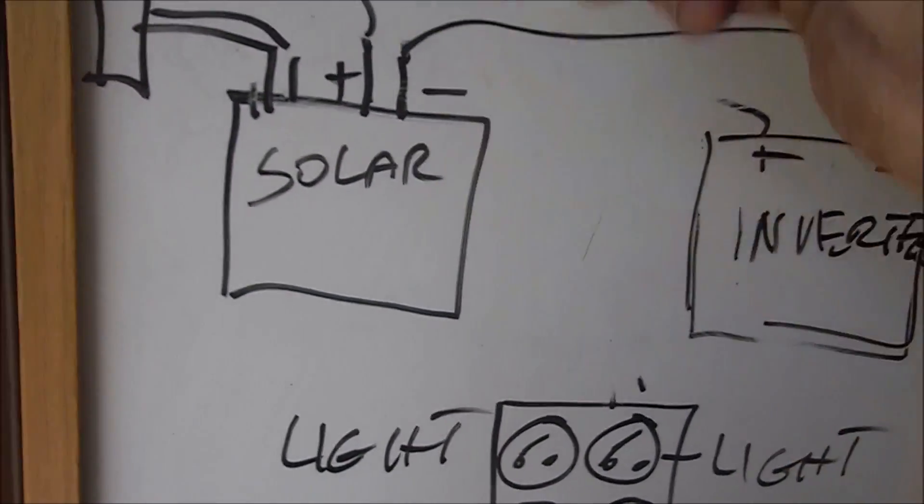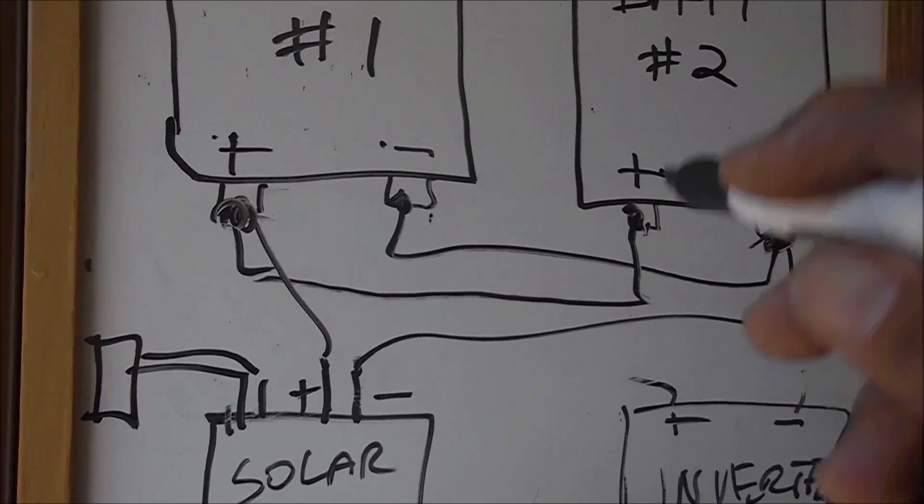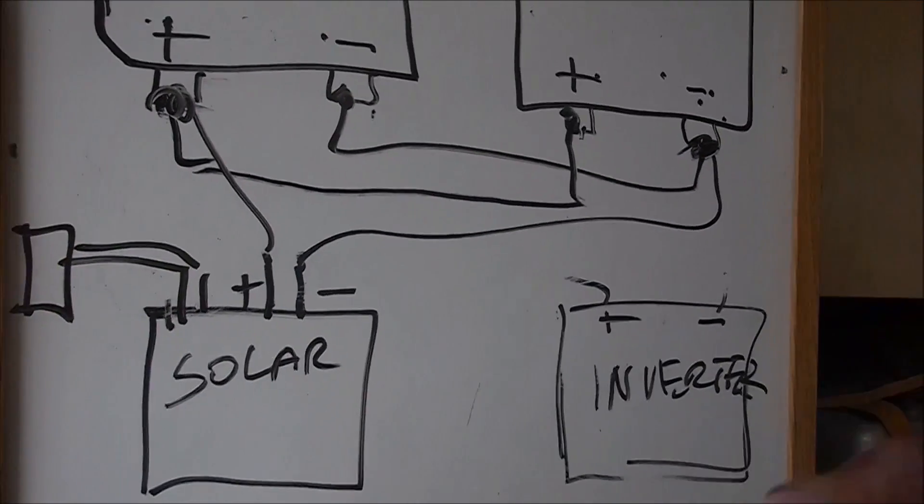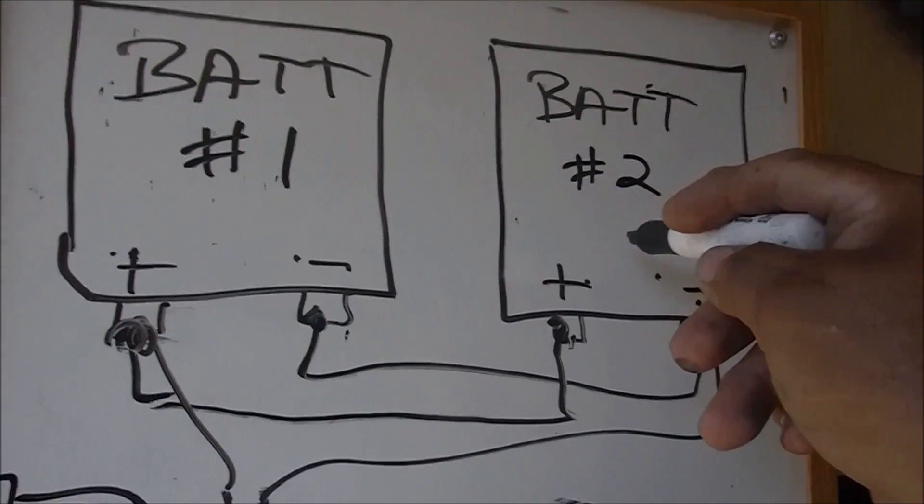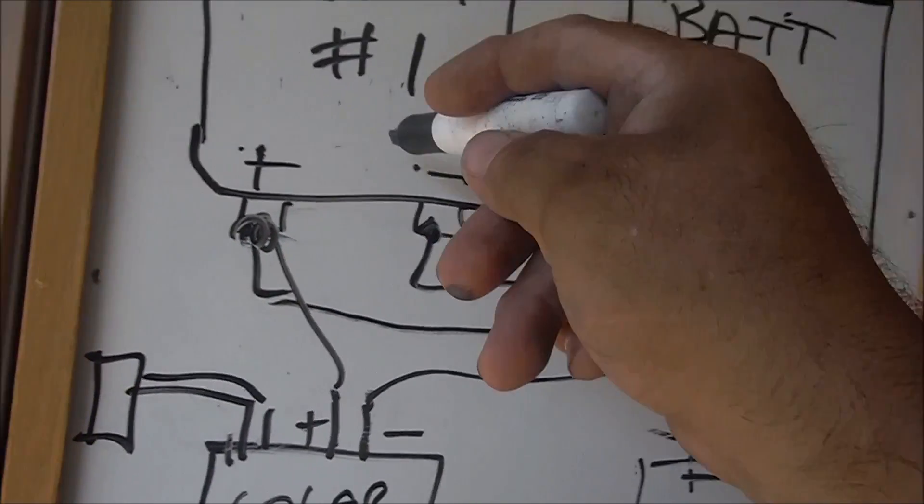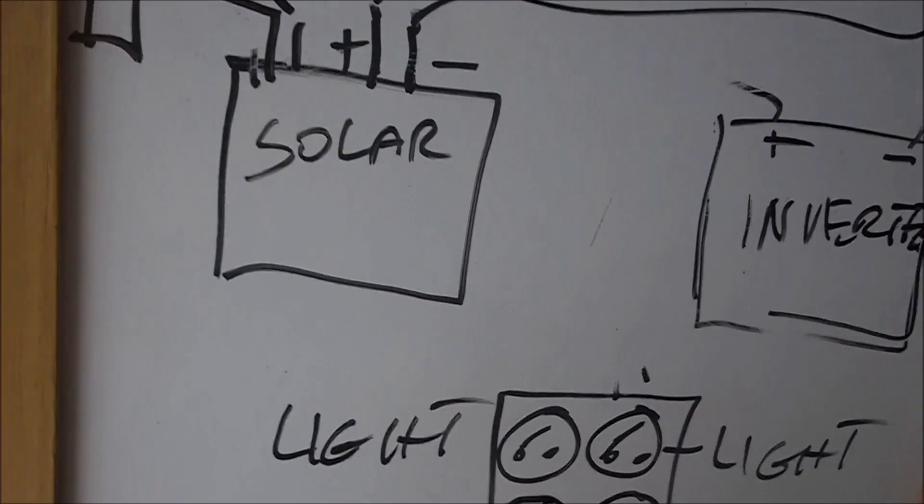This way, when you're drawing, you're drawing evenly. There's arguments about that, but some people take it just from one battery, which is right, but if this one's, let's say, half the life or dead, it's going to drain this one. So by doing it this way, it evens it out. That's my argument.